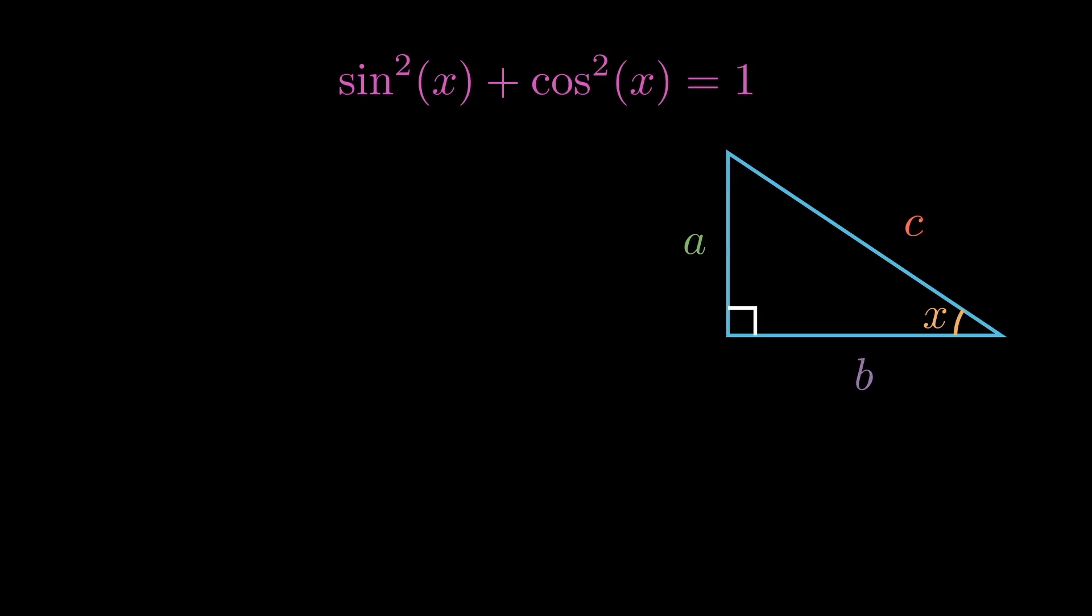Let's start simple and find out what is sine of x. Well, looking at the triangle, we know sine is the opposite side over the hypotenuse, so we can write A over C. And for cosine, we know it is adjacent over hypotenuse, so B over C.